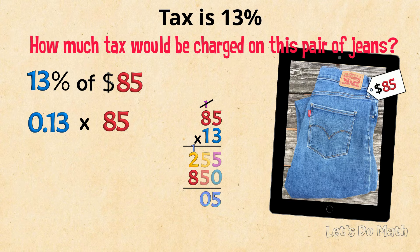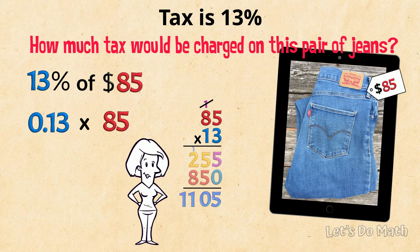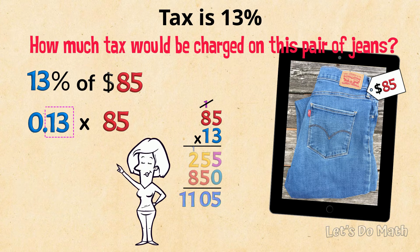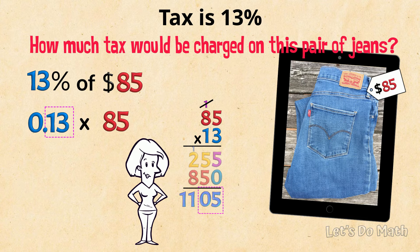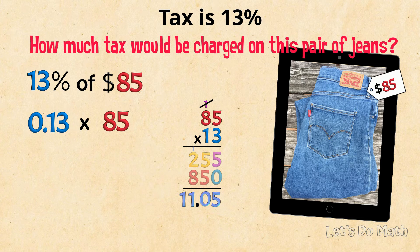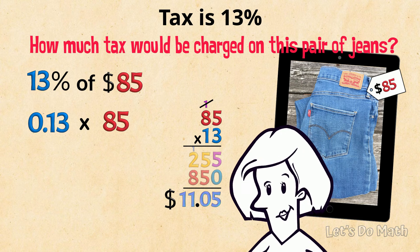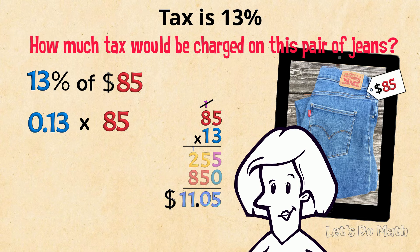Then 5 and 5 is 10. Now 8 and 2 is 10, plus 1 is 11. Now for the decimal points — in the original number we have 2 decimal figures, so we need 2 decimal figures in the answer: 11.05. We're working in dollars, so write the dollar sign.